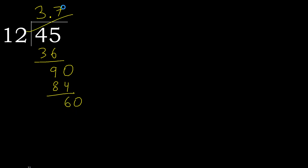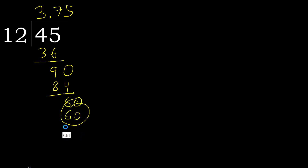12 multiplied by 5 is 60; is not greater. Subtract: 0. Therefore finished. 45 divided by 12 is here.